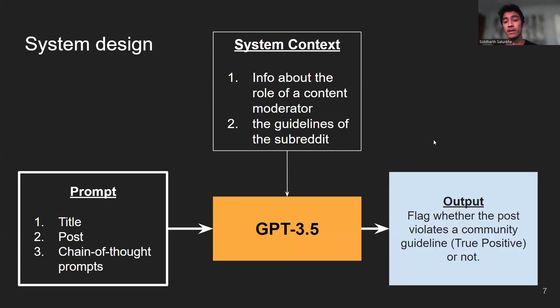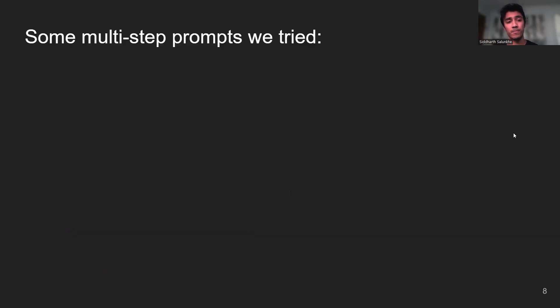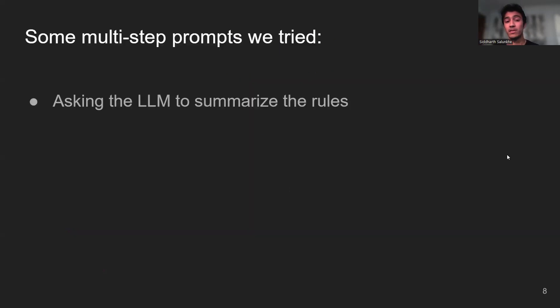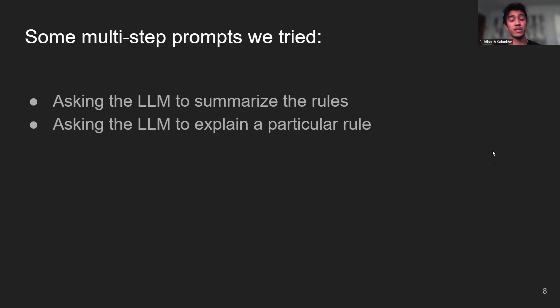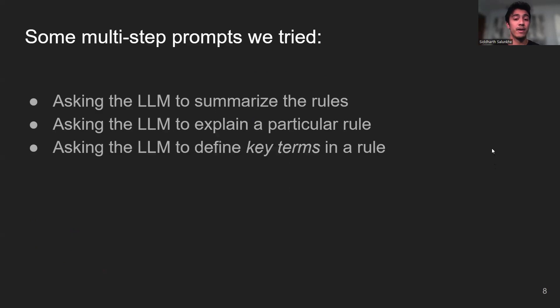The output is a flag of whether the post violates a community guideline or not. Some of the multi-step prompts we tried were asking the LLM to summarize the rules, explain a particular rule, and define key terms in a rule.